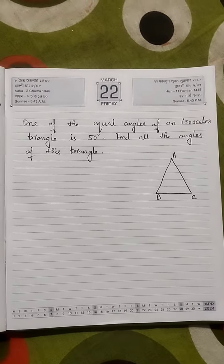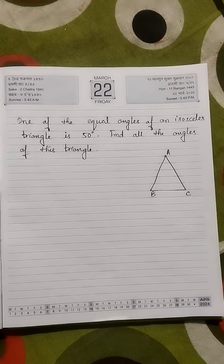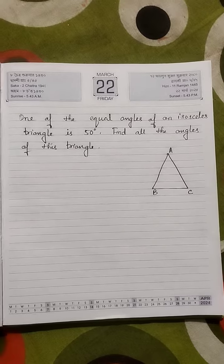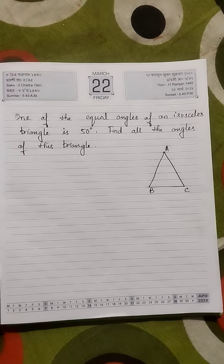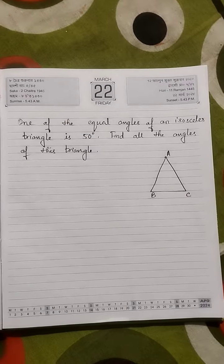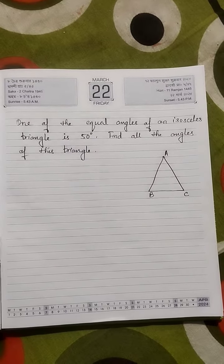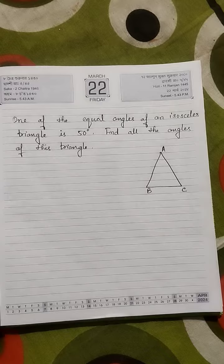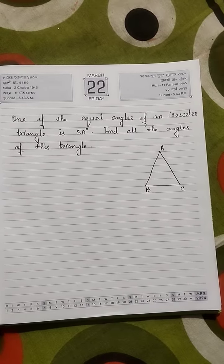Hello everyone, welcome to my YouTube channel Learning by Heart. Today I will teach you math, and the question is: one of the equal angles of an isosceles triangle is 50 degrees. Find all the angles of the triangle.